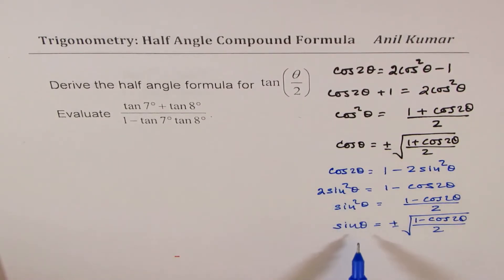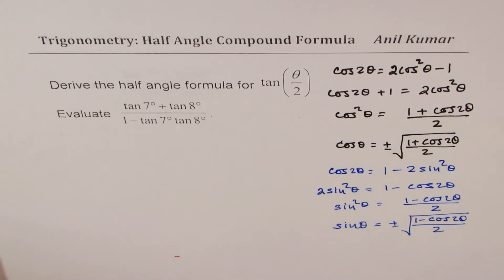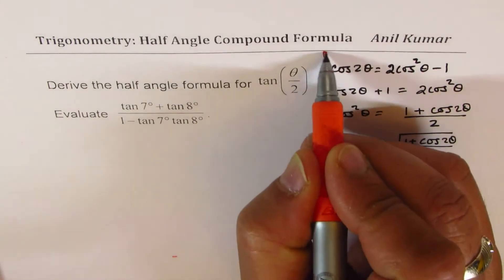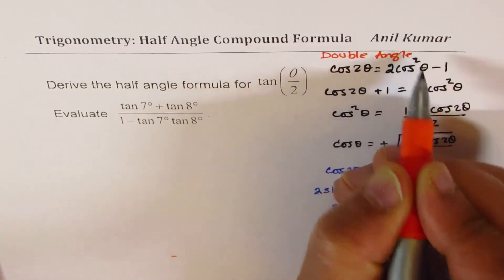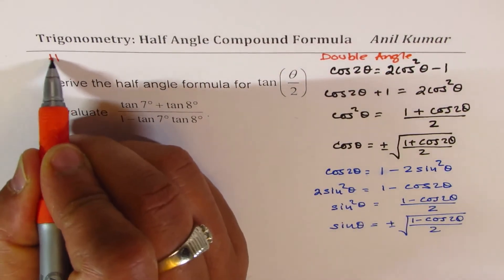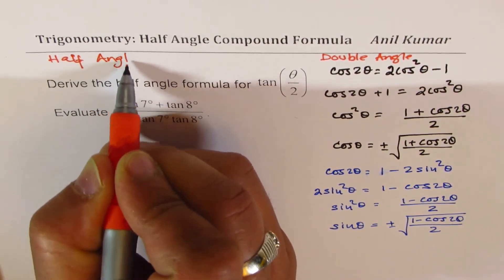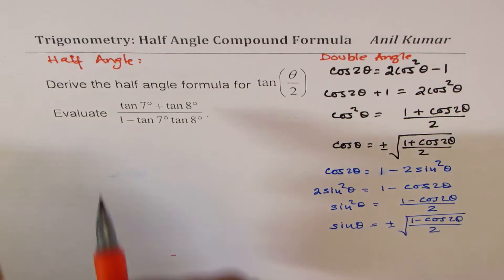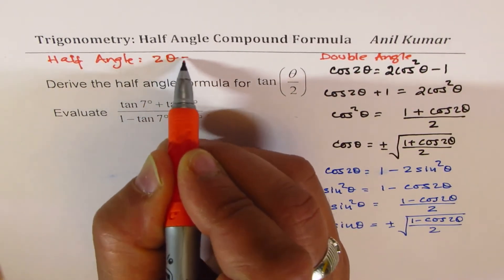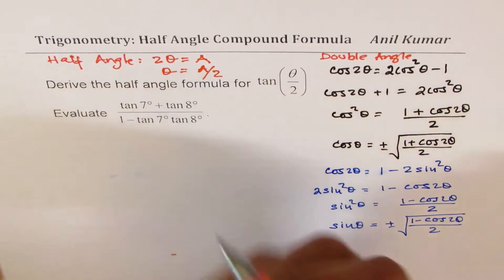So here we have formulas which relate the angle to the double-angle — these are double-angle formulas. Now, to get the half-angle, we make a simple substitution: let 2θ equal a. In that case, θ will be a/2. So we get the half-angle — that's all there is to it.